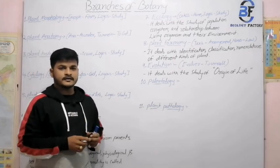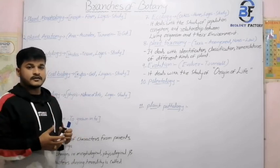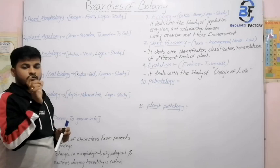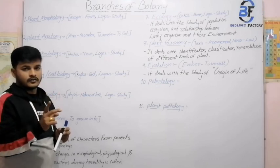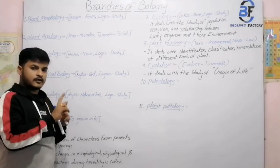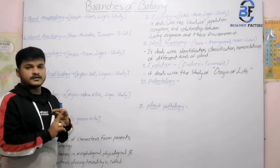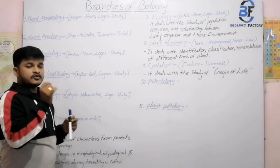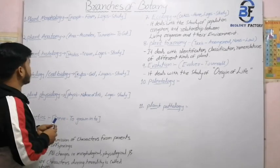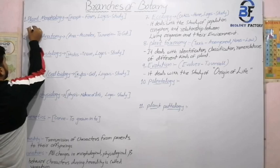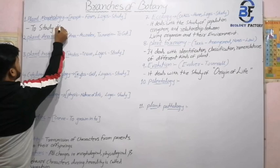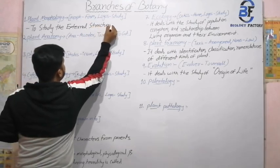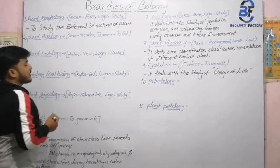If we talk about general branches, the first term that comes to mind is the external structure, that means morphology. So first is plant morphology. If we split the term morphology, two words come from it: one is morphos and another is logos. Morphos means form and logos means study. So morphology means to study the external structure of a plant.